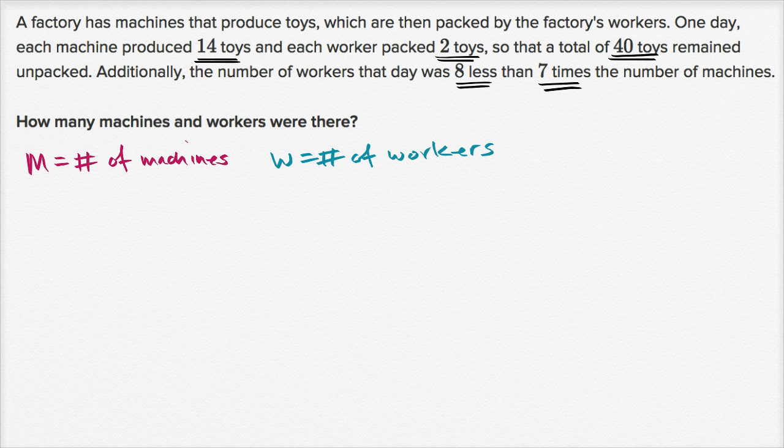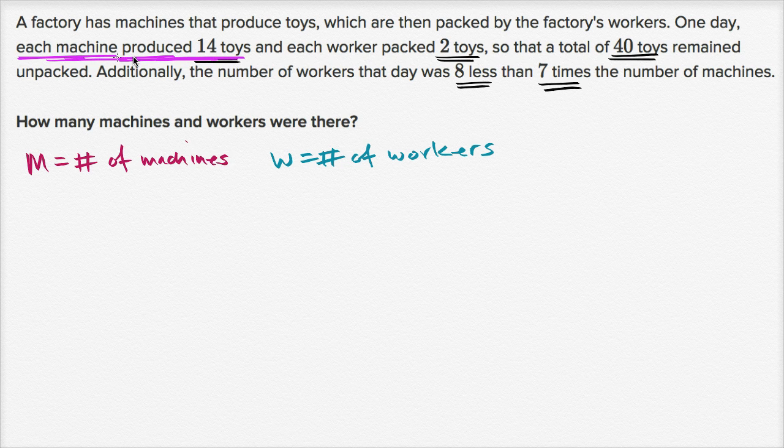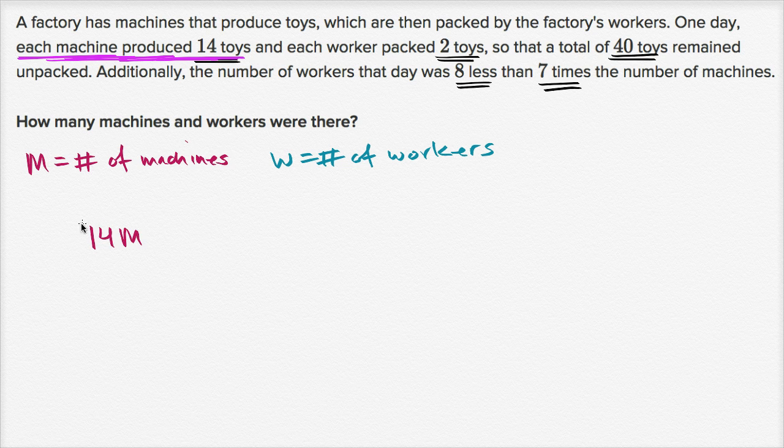So what does the first sentence tell us? It tells us one day each machine produced 14 toys. So if each machine produced 14 toys, what is the total number of toys that are going to be produced? The total number of toys produced is going to be the number per machine times the number of machines. So this is 14M toys produced.